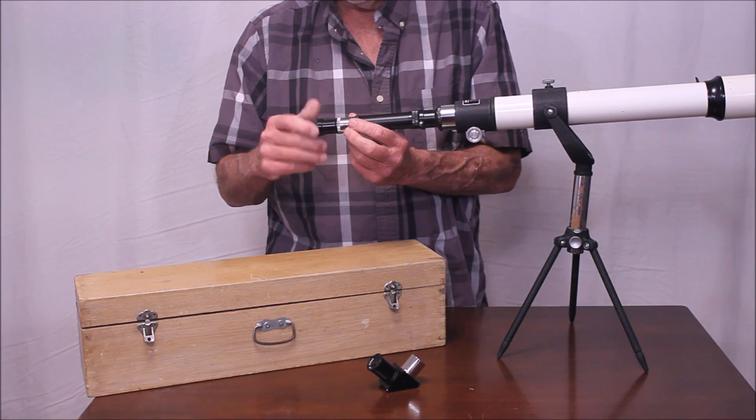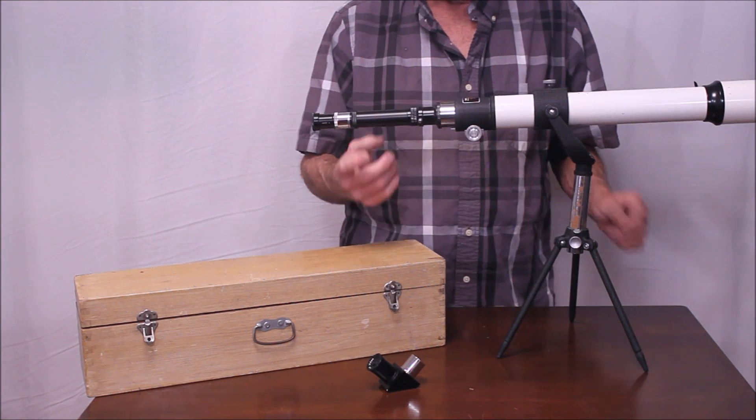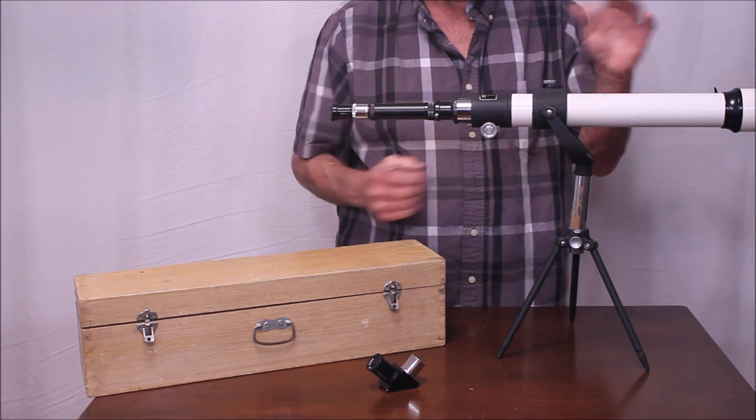That eyepiece is a 22 millimeter Kellner. It was right on there. Now you're set up for use as essentially just a spotting scope.